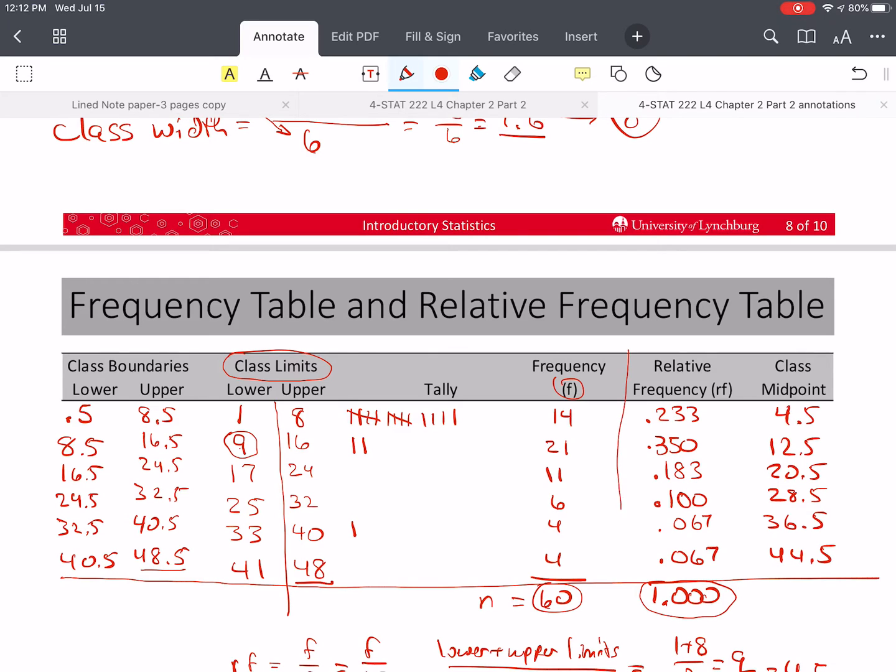A relative frequency table has this column in addition to the other columns. So all the other columns make up a frequency table. By adding this column, we make it a relative frequency table.